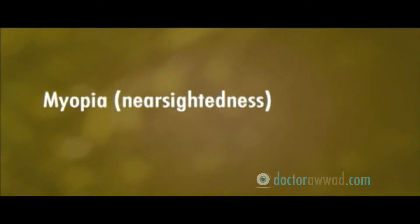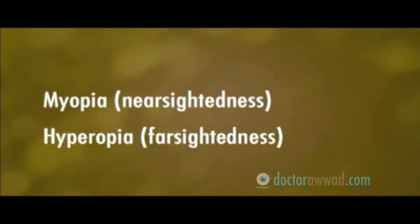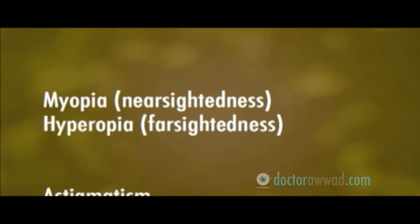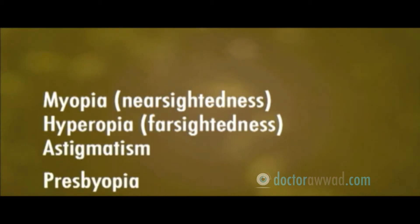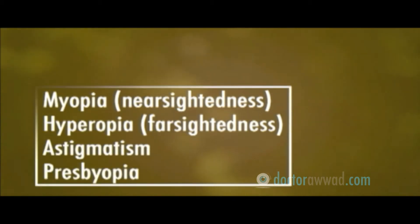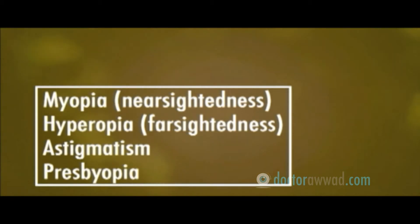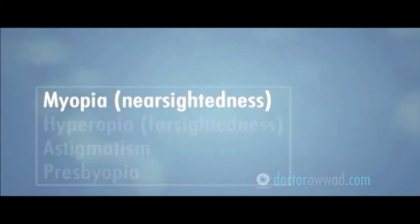The four types are: myopia, or nearsightedness; hyperopia, or farsightedness; astigmatism; and presbyopia. People with refractive errors must have one or a combination of these conditions.